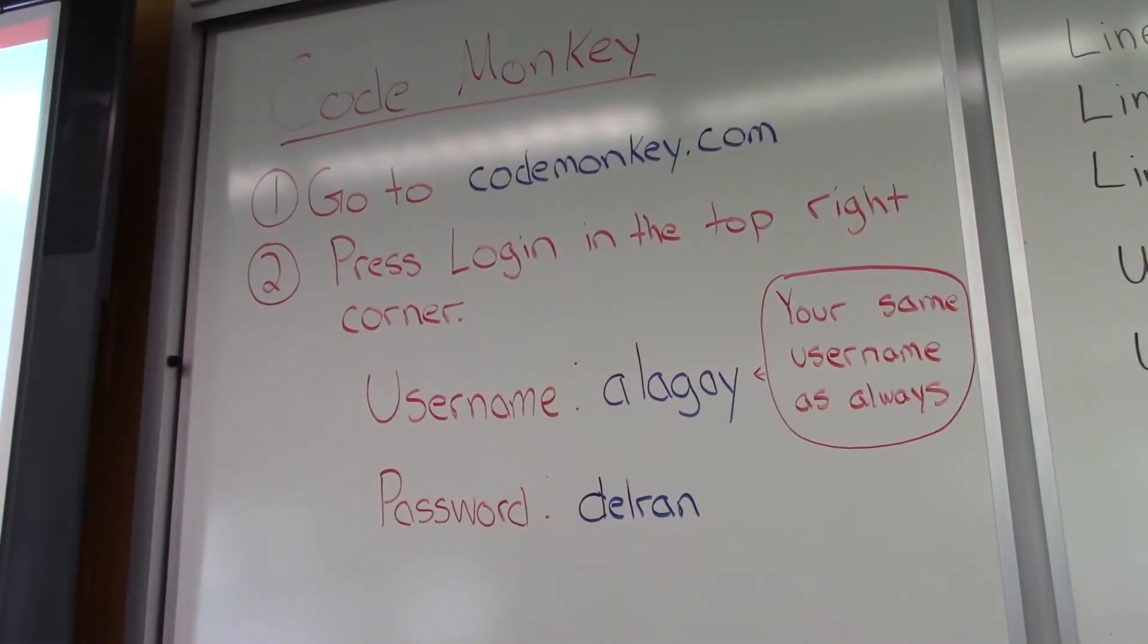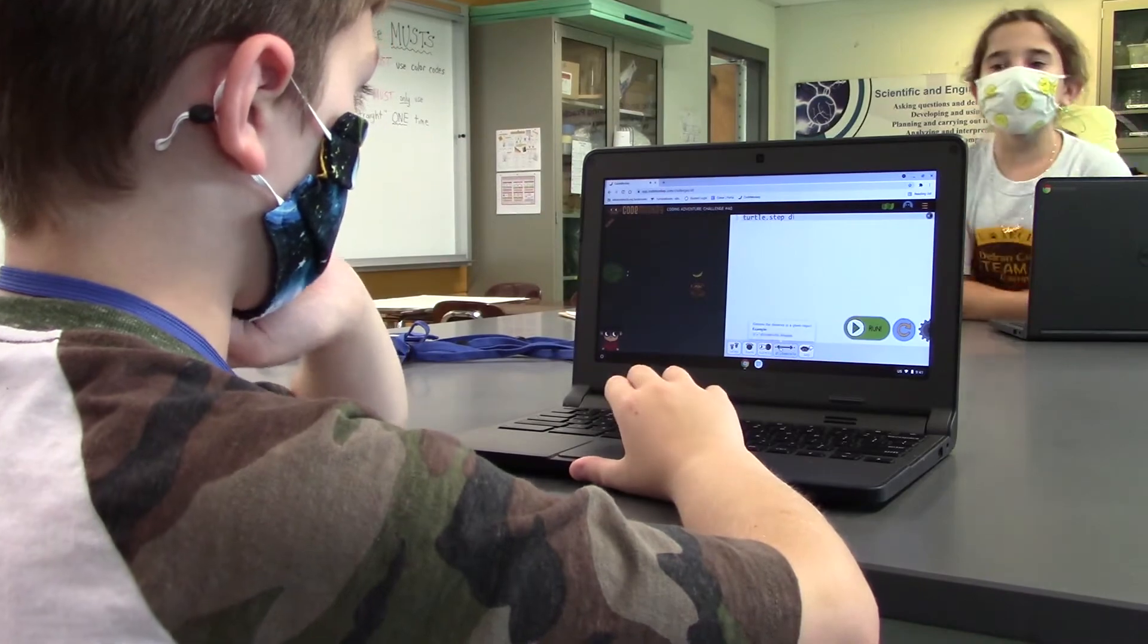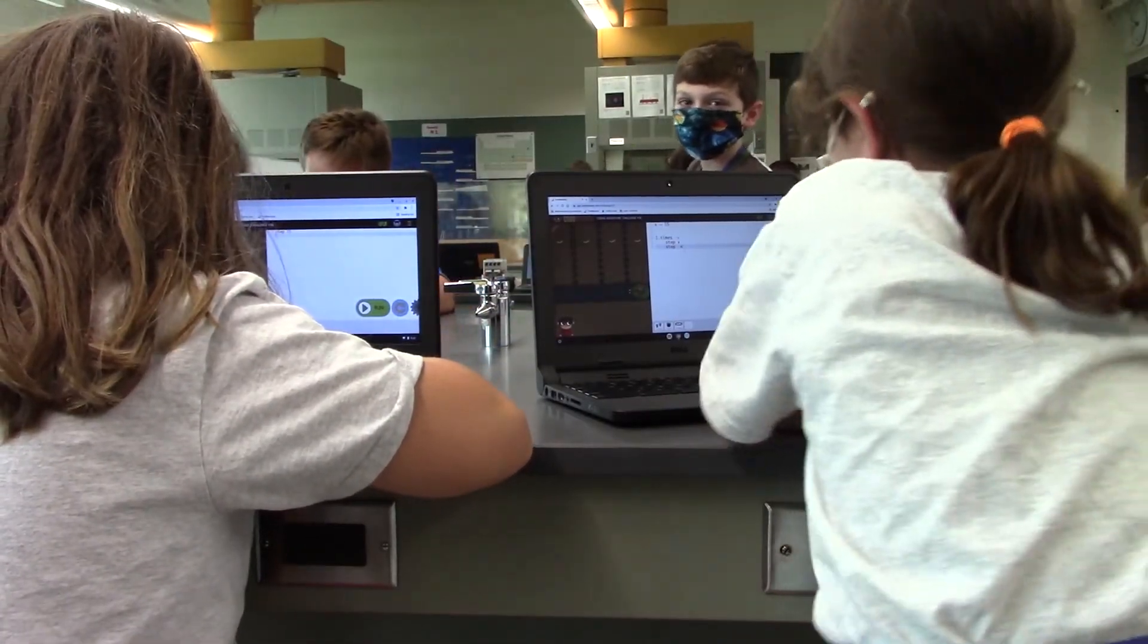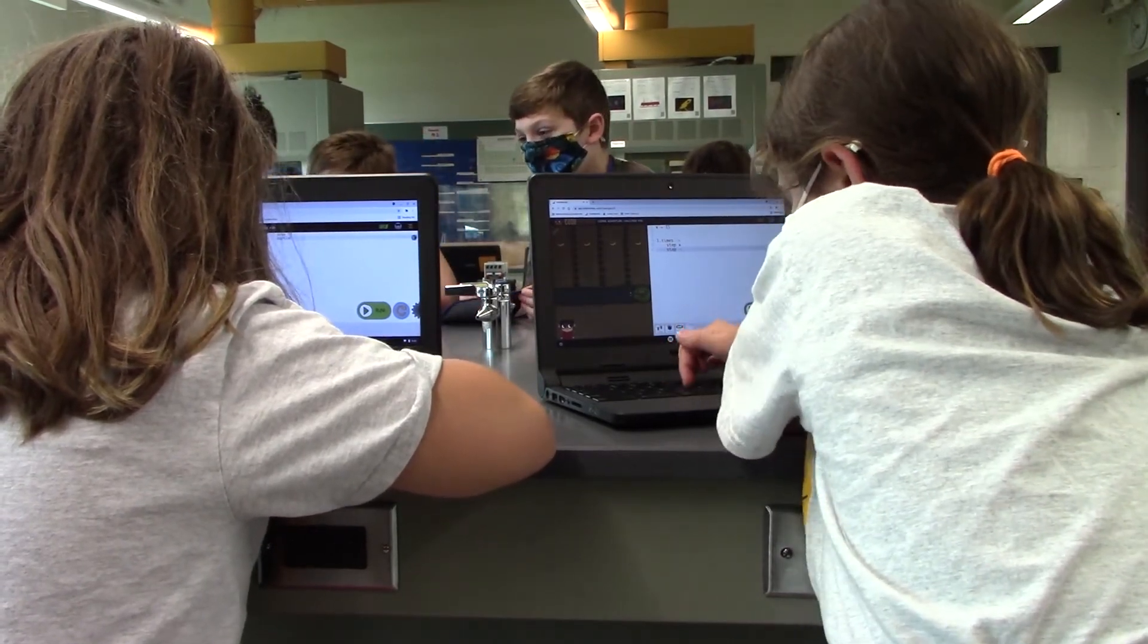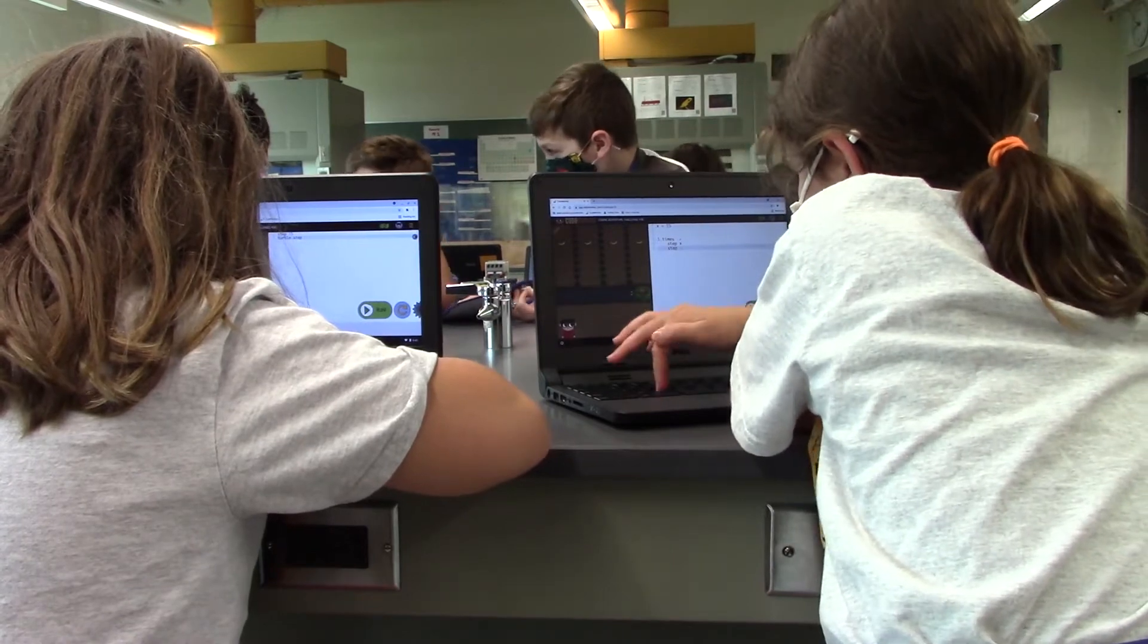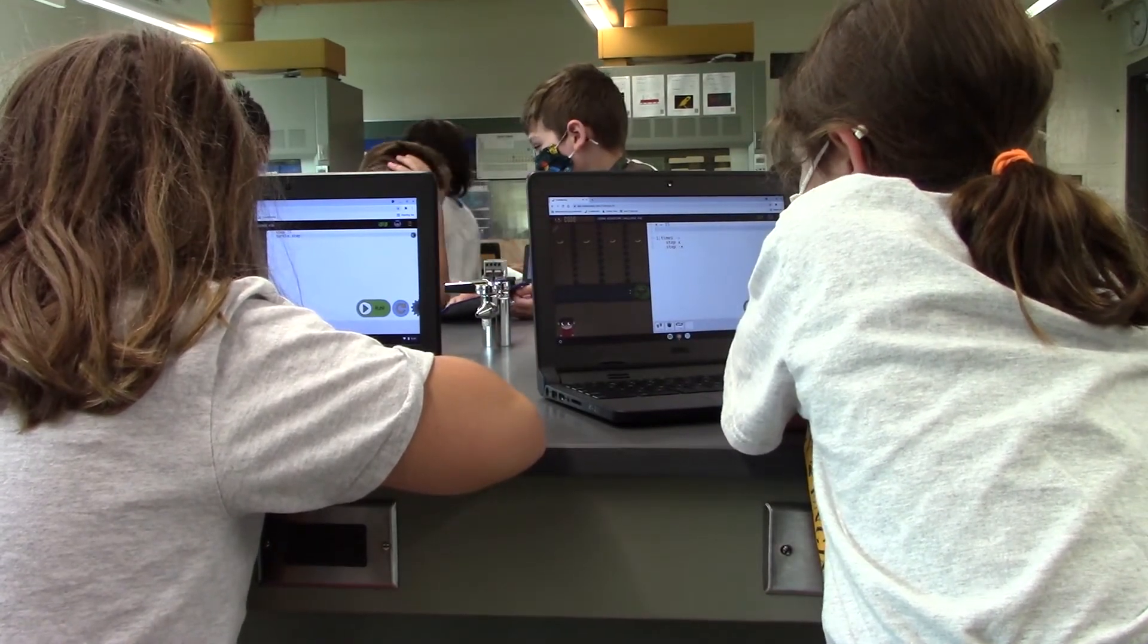When we go over to Code Monkey, we are on an exploration independently through coding. Every level allows the kids to learn how to do something simple. Then the next level they have to apply what they've learned in a previous level without the hints. So that is building skills upon itself that they can use in the real world.